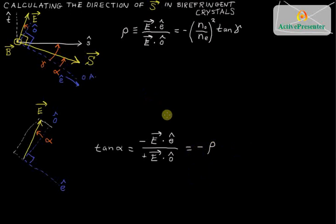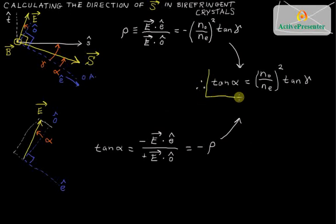So if I now combine these two results, I find, therefore, that the tangent of alpha is very quickly related to the tangent of gamma. And the relationship is just a proportionality by the square of the no and ne values. So this is the formula that you want to use whenever you're trying to figure out the relative orientations of the way the wavefront normal is pointing and the way that the pointing vector is going.